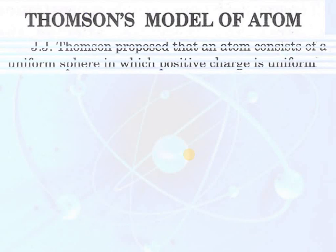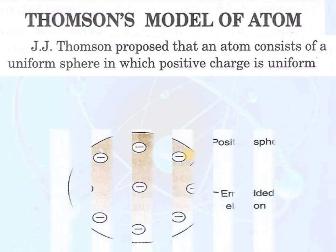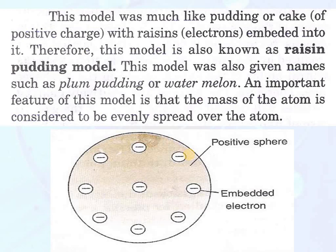Thomson model of atom: J.J. Thomson proposed that an atom consists of a uniform sphere in which positive charge is distributed all over the atom. This model is much like a pudding or cake with positive charge, with raisin-like electrons embedded into it. Therefore, this model is also called the raisin pudding model and also the watermelon model — because like a watermelon, the red portion is distributed all over and the black seeds are present in between. Similarly, J.J. Thomson said that positive charge is spread all over the atom and negative particles — electrons — are present in between. An important feature of this model is that the mass of the atom is considered to be evenly distributed over the atom.